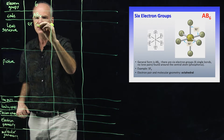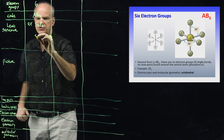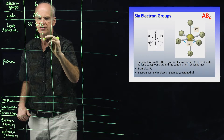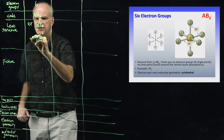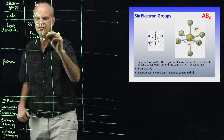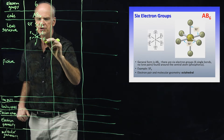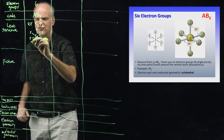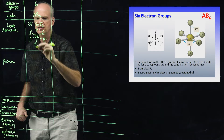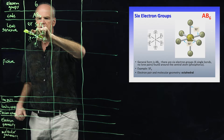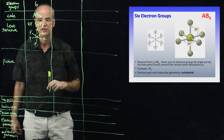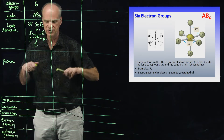The example molecule is selenium hexafluoride. Its Lewis structure has selenium in the center with six fluorine atoms bound to it. Selenium definitely breaks the octet rule, and that's fine — it's in period four, so it can have more than an octet. Here it has 12 electrons bound to it. Now let's draw a picture of what the molecule looks like.